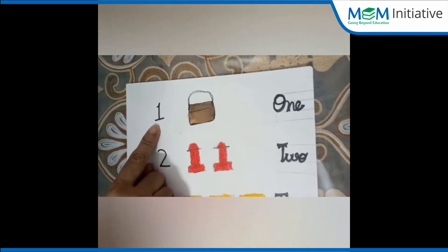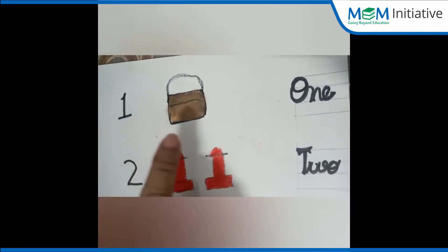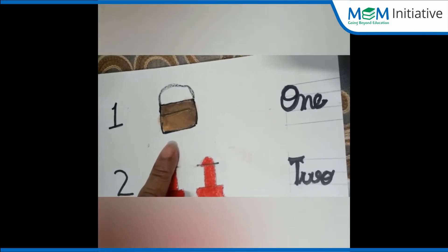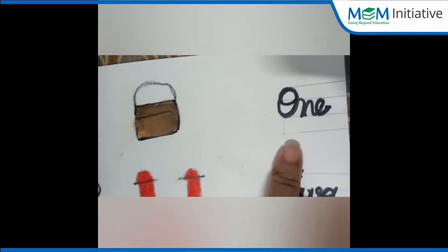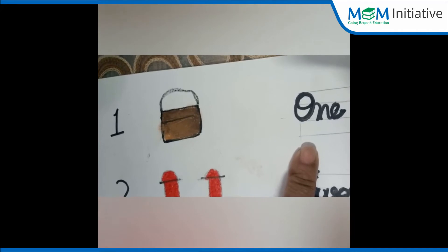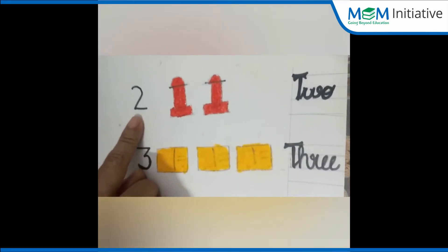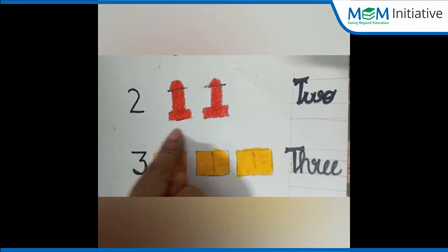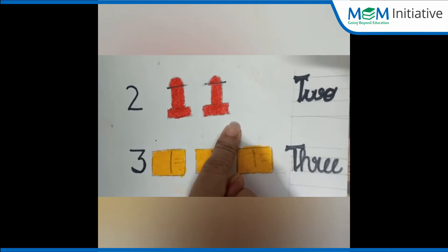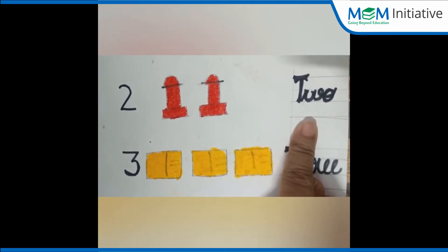And you see, what number is this? Yes, this is number 1. And what object is this? Yes, this is 1 bag. And what number name is this? Yes, this is number name 1. Now children, tell me what number is this? Yes, this is number 2. And what are these? Ma'am has drawn 2 letter boxes. And what number name is this? This is number name 2.